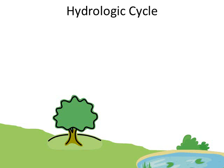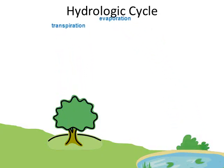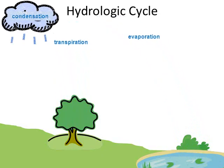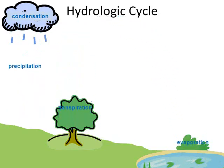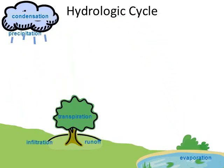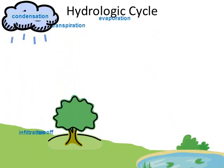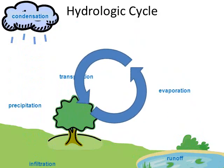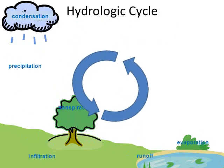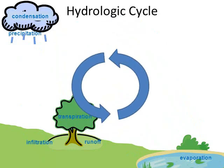To summarize the water cycle: water goes up through transpiration and evaporation, eventually leading to clouds condensing and forming. When water vapor gets too heavy, it condenses and falls as some type of precipitation. When water hits the ground, it will either run off downhill or soak into the soil as infiltration. This is the hydrologic, or water cycle.